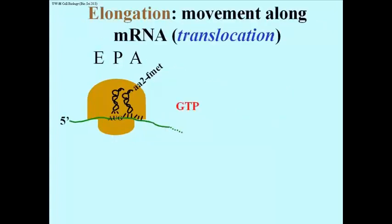That's not the end of elongation. Now that we have a dipeptide formed, at least at the beginning, we need to free up the A-site, put the next codon into the A-site so the third amino acid can get in.